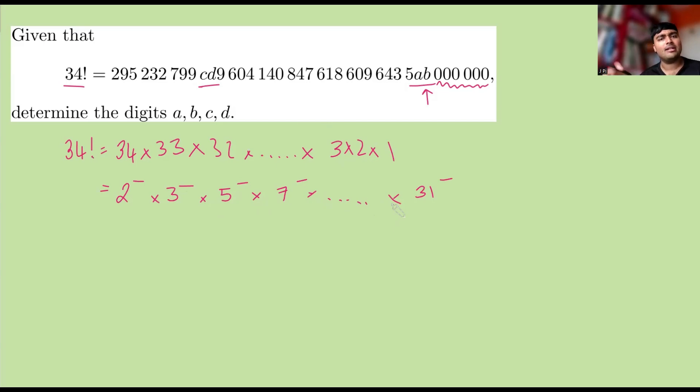Now, how do we get a zero at the end of a number when we're multiplying a bunch of things together? We have to multiply by 10. How do we get a 10 here? Well, we have to combine a 2 and a 5. So whatever these numbers here are in this 34 factorial, let's just make them up for a second. Imagine it was 2 to the 41 there, and this was a 5 to the 8 here.